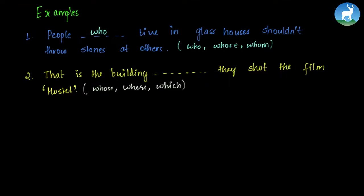'That is the building ___ they shot the film Hostel.' We discard whose immediately because we're not talking about a person — we're talking about a building. We need to choose between where and which. Since the film is shot inside the building, we choose where. We would have used which for animals or things, but since we're talking about a building, we use where.